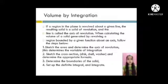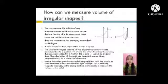First, sketch the area and determine the axis of revolution. This determines the variable of integration. Second, sketch the cross section - disk, shell, washer - and determine the appropriate formula. Third, determine the boundaries of the solid. Fourth, set up the definite integral and integrate.